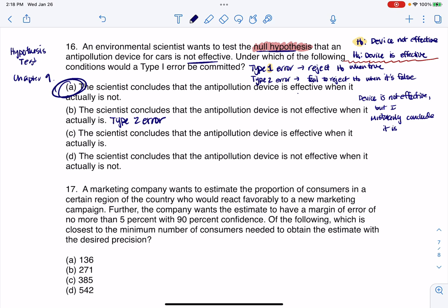OK. For part C, it says the scientist concludes that the anti-pollution device is effective when it is. So this is not even an error. That's a good thing. Right. If you conclude it's effective and it's effective, then great.